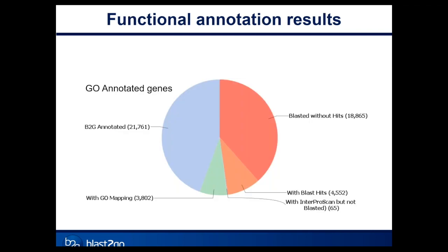In summary for the first two steps: over 49,000 contigs were obtained from the assembly, we were able to assign some kind of functional description to over 30,000 contigs, and over 21,000 transcripts now have Gene Ontology annotations. This is a pretty typical annotation chart for non-model species without closely related, well-studied species available in GenBank.